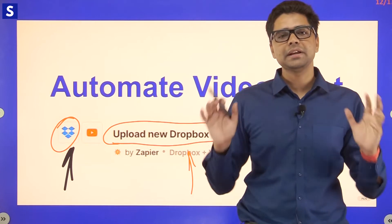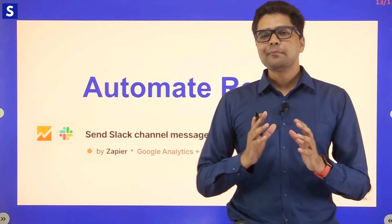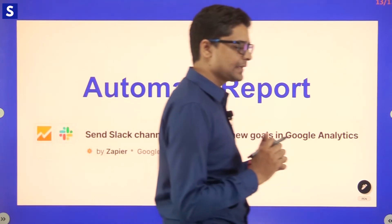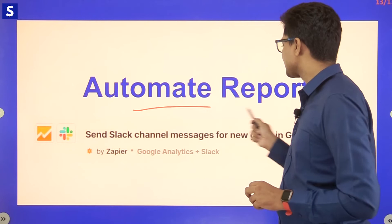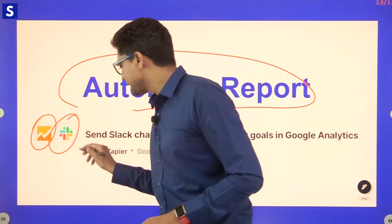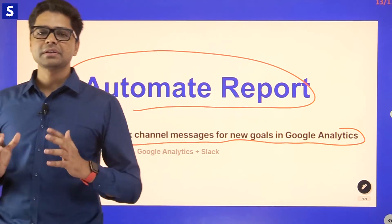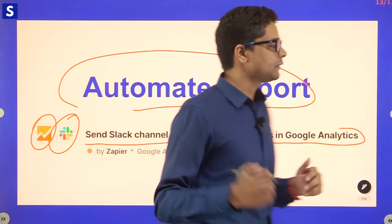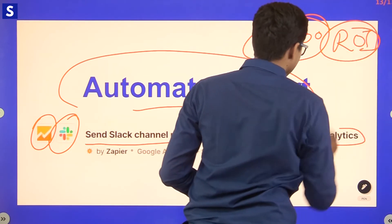This is important for small business owners because you are preventing data breach — no one needs access to your YouTube channel. For marketing reports, instead of opening Google Analytics manually, you can automate the report process by connecting your Google Analytics account with Slack. Using the 'send Slack channel message for new goals in Google Analytics' flow, your marketing team can see the ROI of a campaign — for example, how a $1,500 campaign performed — directly in a Slack channel without opening any special tools.